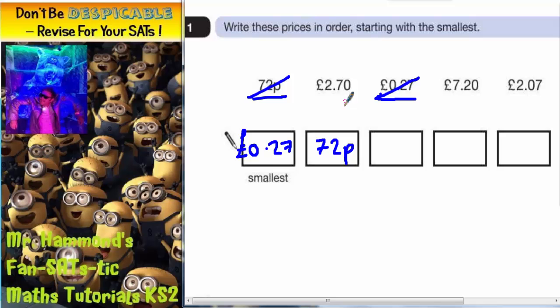So we have two pounds seventy, seven twenty, and two pounds seven. We can see that this one and this one both begin with two pounds, whereas this one is seven pounds.